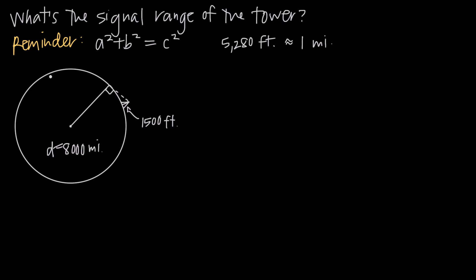If we draw in the radius of a circle, we have the radius that touches the perimeter of the circle at this point right here. So the tangent line to the circle at this particular point would be the line that passes through this point and no other points on the circle — it would just be the line that touches the circle only at this exact point.